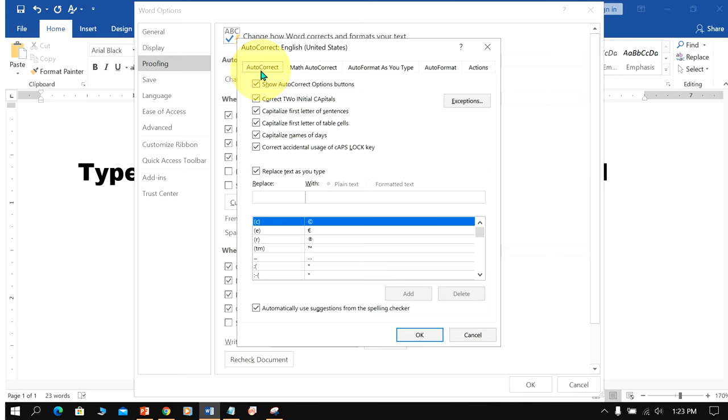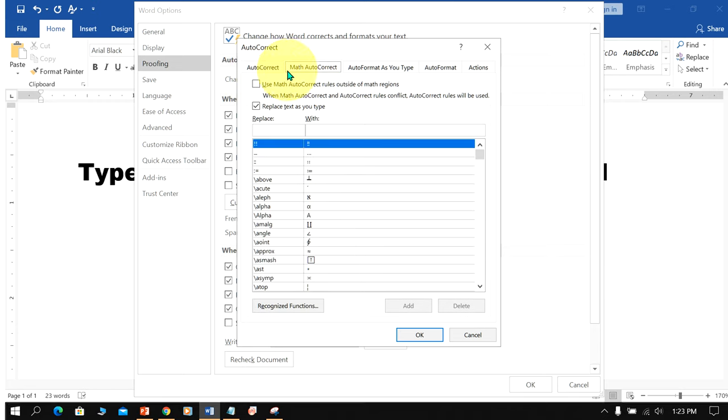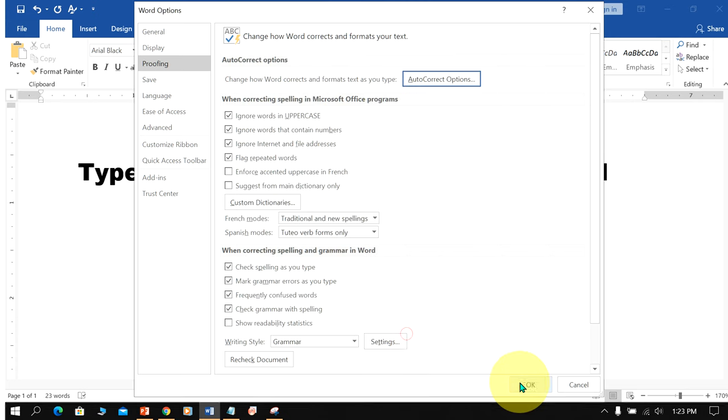By default, you will be at AutoCorrect options. Click on Math AutoCorrect and select the first option: Use Math AutoCorrect rules outside of math regions. Check it, then click OK and OK.